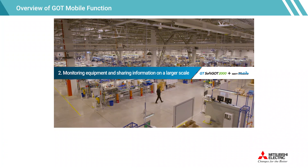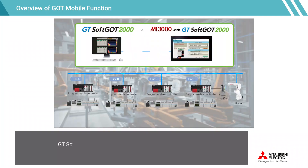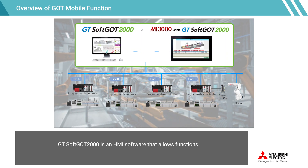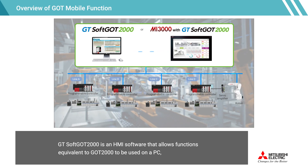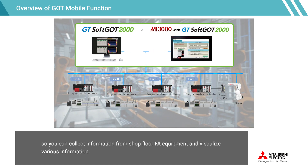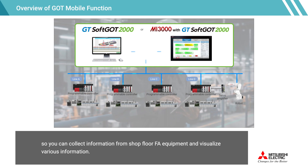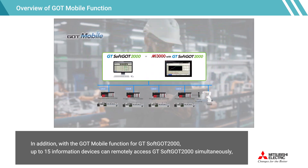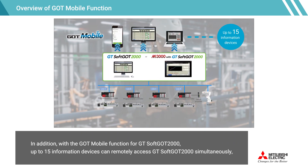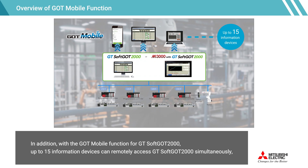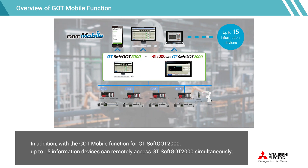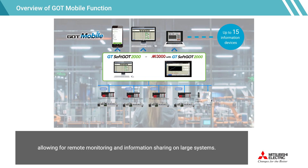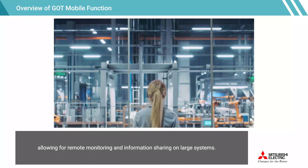For monitoring equipment and sharing information on a larger scale, GTsoft GOT 2000 is an HMI software that allows functions equivalent to GOT 2000 to be used on a PC, so you can collect information from shop floor FA equipment and visualize various information. With the GOT mobile function for GTsoft GOT 2000, up to 15 information devices can remotely access GTsoft GOT 2000 simultaneously, allowing for remote monitoring and information sharing on large systems.